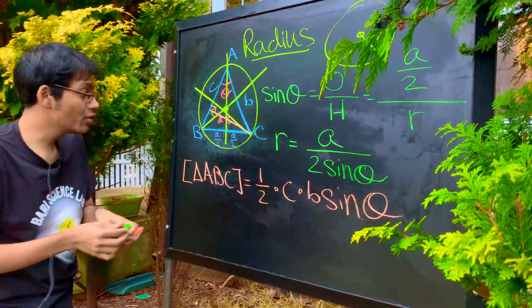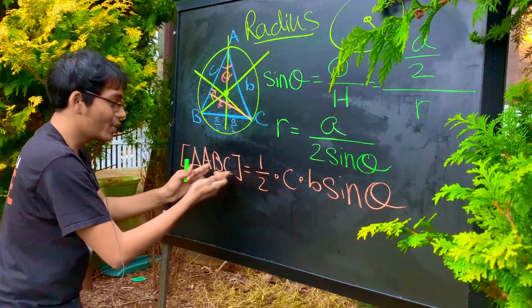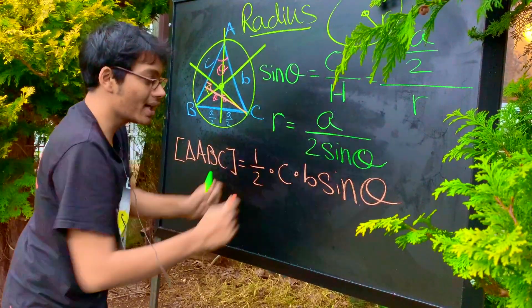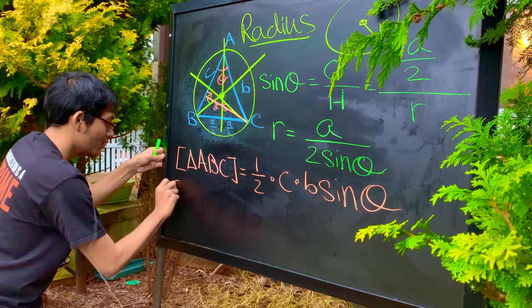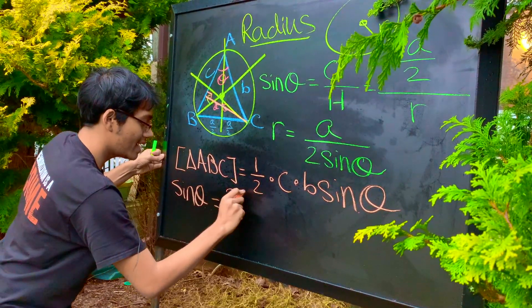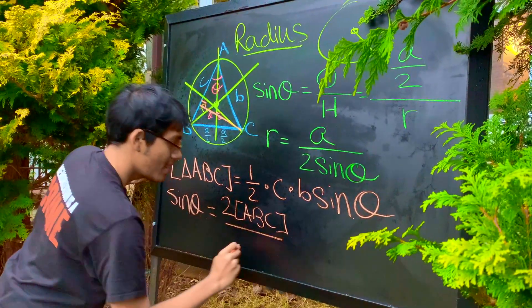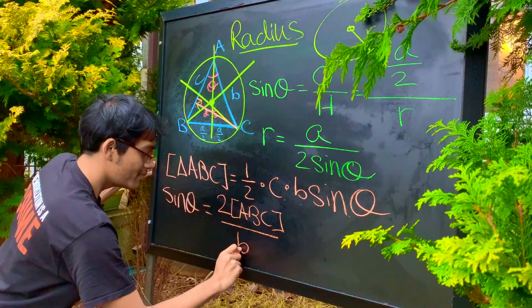Well, now, if you look carefully, we're almost done. We're almost there. We can solve for sine theta here and then plug in. So, what's sine of theta? Sine of theta is equal to 2 times the area of the triangle divided by BC.